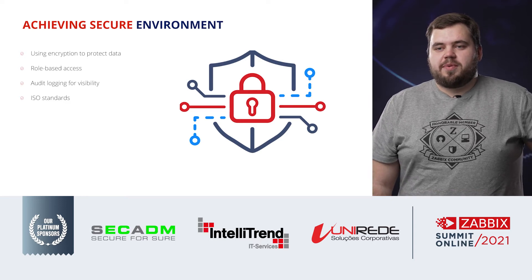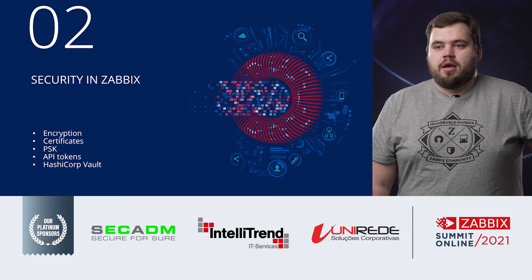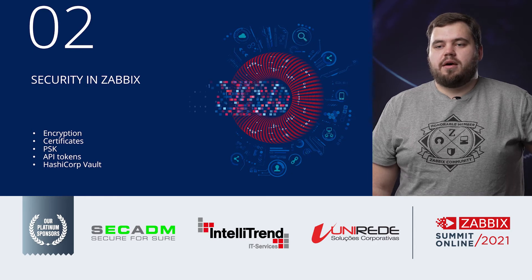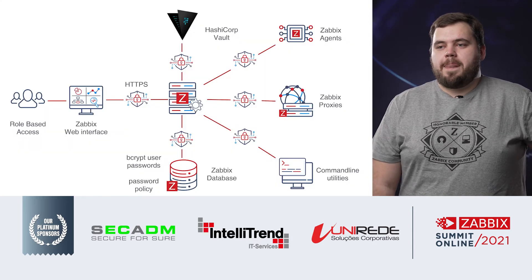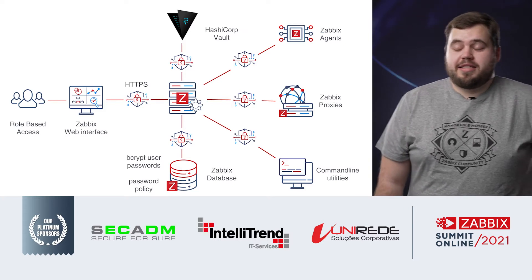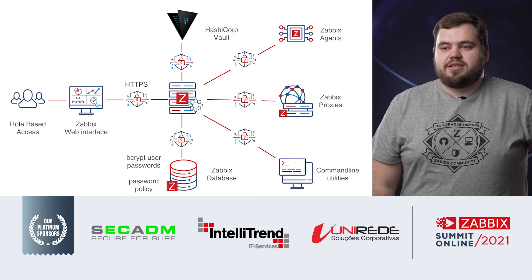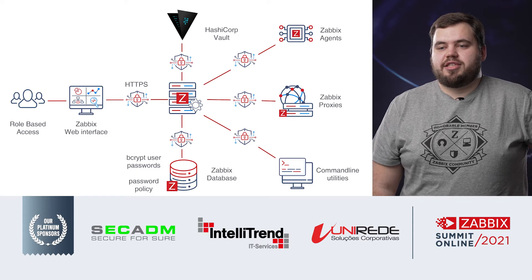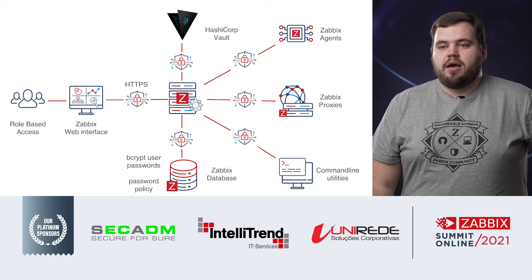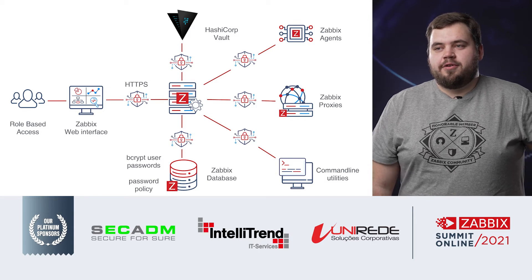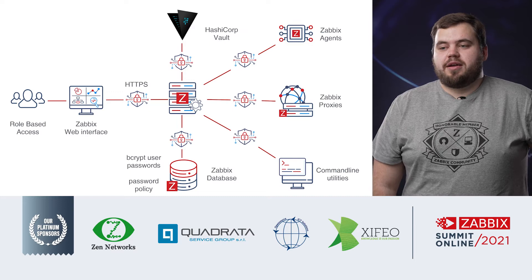We are also planning on implementing ISO standards, which will be a big step for Zabbix in the future. In more depth on how security works in Zabbix — there are a lot of components. You can encrypt all Zabbix components: agents, proxies, connection to the database, as well as a secure connection to the front-end using HTTPS. We also offer role-based access, and all user passwords are saved encrypted in the database — no plain text. A new feature in Zabbix 6.0 is password policies, which I'll talk about a bit later.